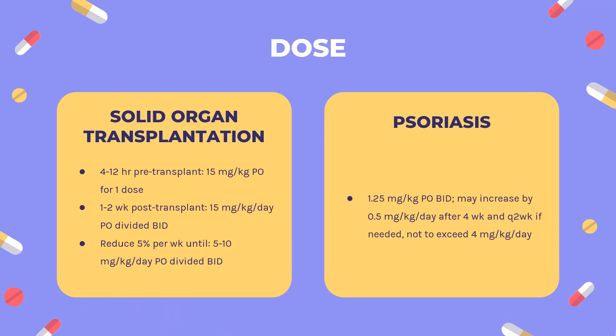Dosing — Solid Organ Transplantation: For prophylaxis of organ rejection in kidney, liver, and heart allogeneic transplants, used in combination with azathioprine and corticosteroids. Dosage should be adjusted according to trough levels. Oral dosing: 4–12 hours pre-transplant, 15 mg/kg PO for one dose; 1–2 weeks post-transplant, 15 mg/kg/day PO divided BID, then reduce by 5% per week until reaching 5–10 mg/kg/day PO BID. IV dosing: 4–12 hours pre-transplant, 4–6 mg/kg IV for one dose over 2–6 hours; post-transplant until oral therapy is tolerated, 5–6 mg/kg IV once daily.